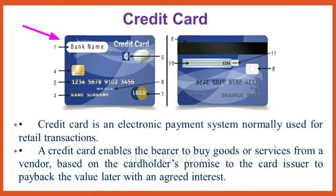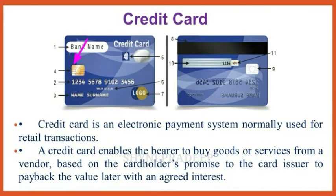Looking at the credit card: the front shows the bank card name, the credit card number which is a system-rigid unique identification number, the name of the card holder, and the EMV chip — an integrated chip where the cardholder's information is stored. EMV stands for Europay, MasterCard, and Visa — the three companies responsible for developing this technology.